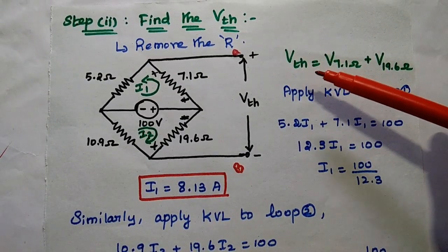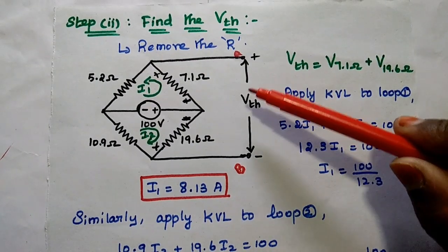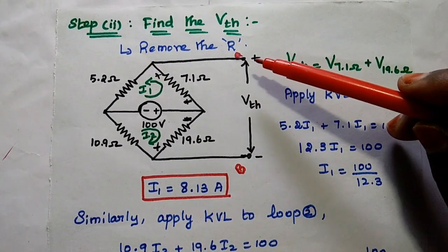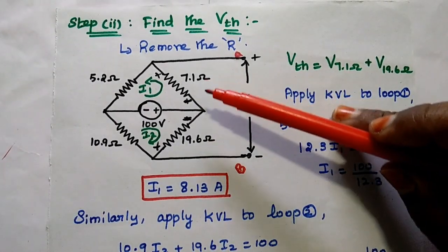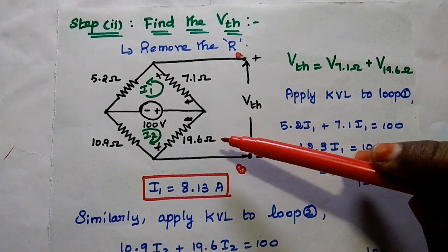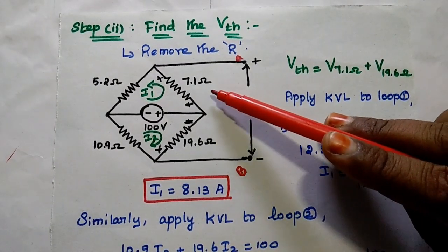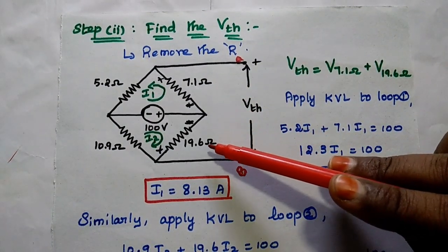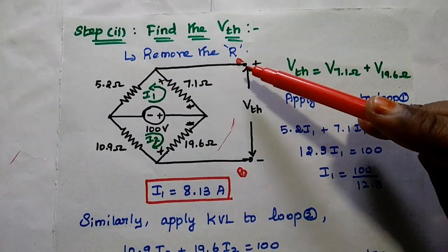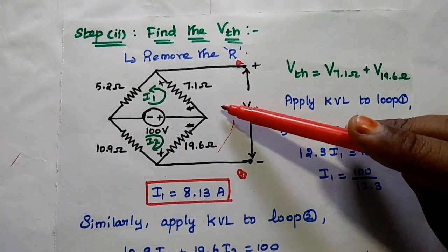Next we are going to find out the Thevenin's voltage. We simply remove the load resistor from the circuit and consider terminals AB. We find the Thevenin's voltage between terminals A and B. Here we have two resistors in series between A and B terminals — one is 7.1 ohm and the other is 19.6 ohm. The Thevenin's voltage equals the sum of the voltage drops across the 7.1 ohm and the 19.6 ohm resistors.